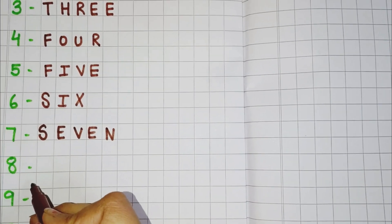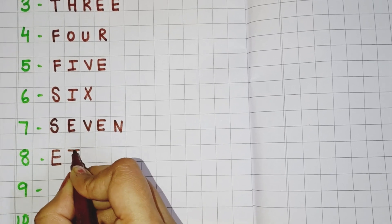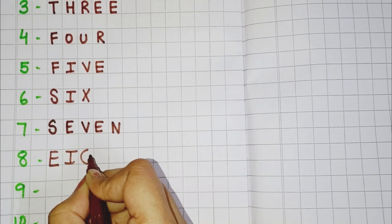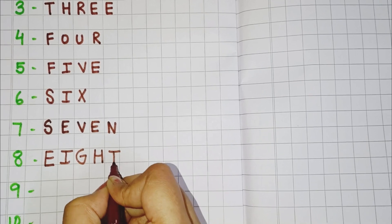Now the next number is 8. So you will write E, I, G, H, T. Eight.